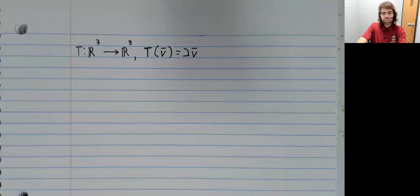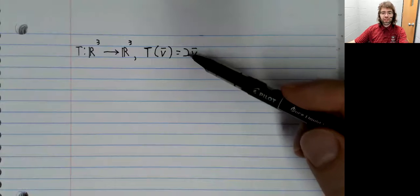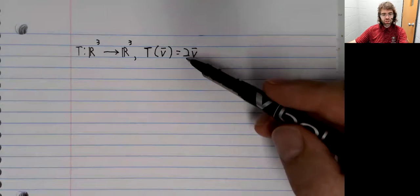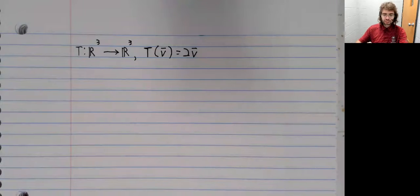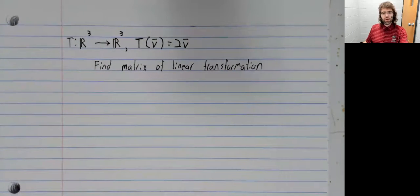Our first example we gave after matrix vector multiplication was that scalar multiplication is linear, it's a linear transformation. So, for example, scalar multiplication by two. Let's find the matrix of the linear transformation.